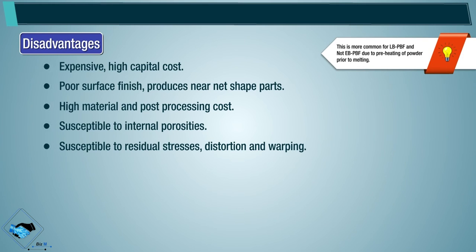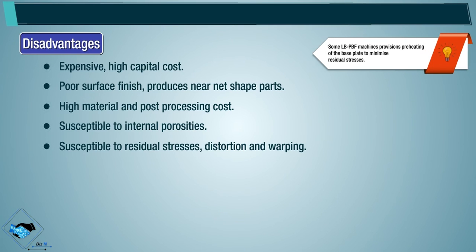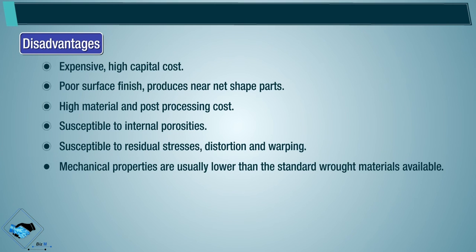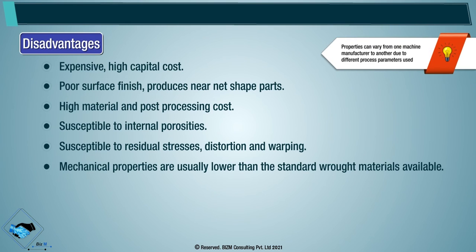Note: Residual stresses and distortion are more common for laser-based PBF (LBPBF) and not electron beam PBF (EBPBF), due to preheating of powder prior to melting. Some LBPBF machines include provisions for preheating the base plate to minimize residual stresses. Mechanical properties are usually lower than those of standard wrought materials, and properties can vary between machine manufacturers due to different process parameters used.